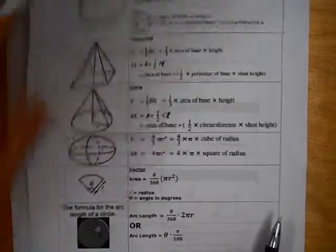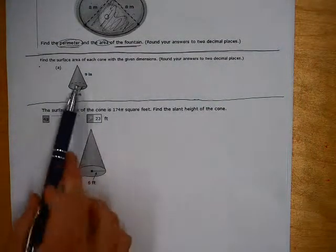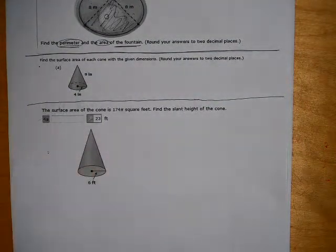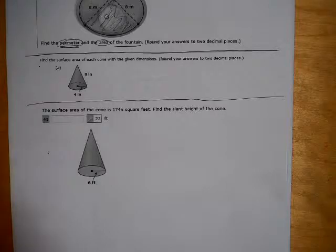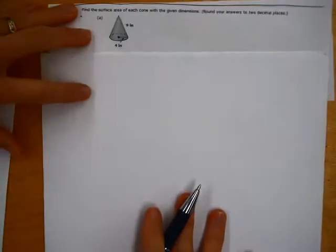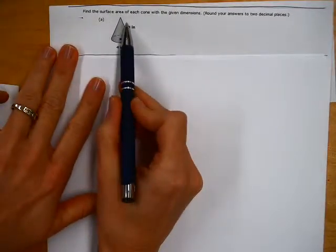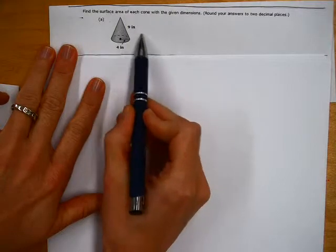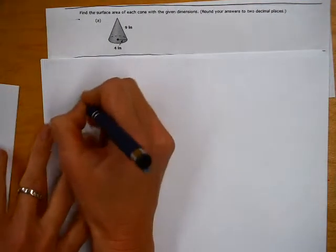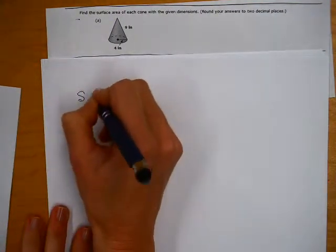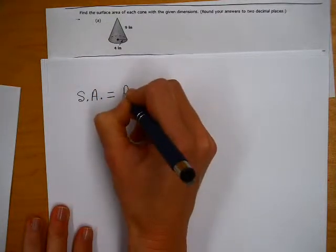So now, if I take that formula, I'm going to write that first for this problem, since I'm going to be finding the surface area of this cone. So, this cone has a radius of four inches, and my slant height they give me from here to here is nine inches.